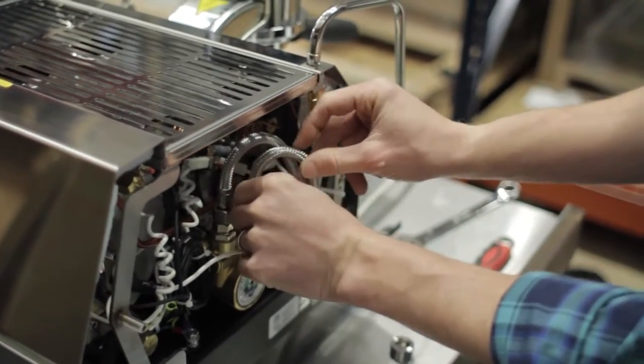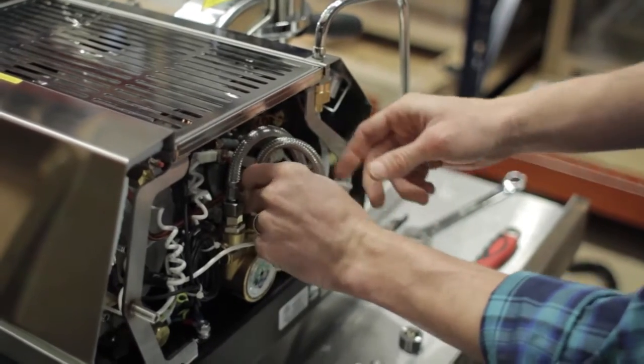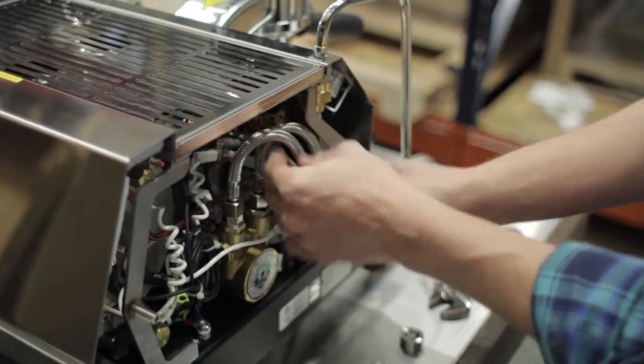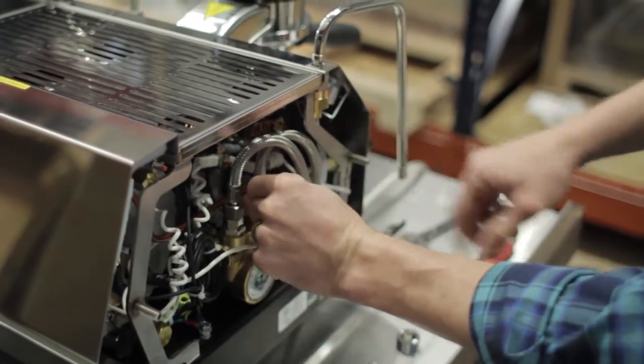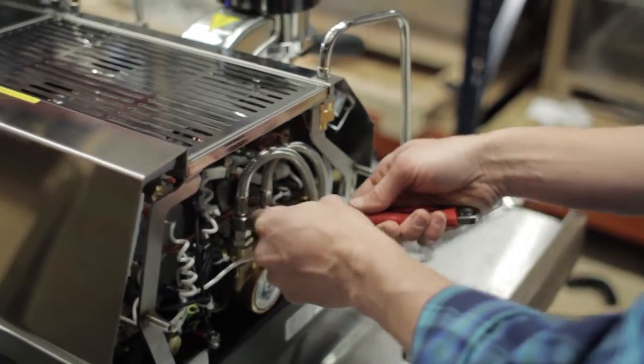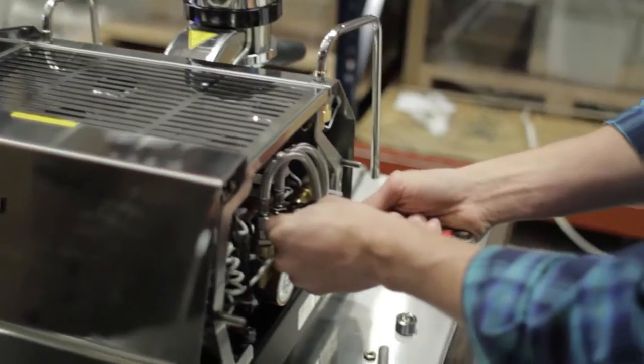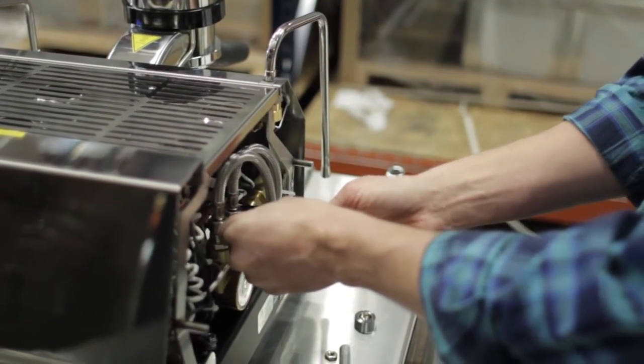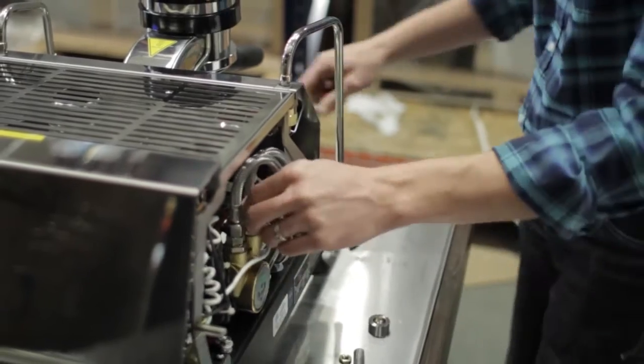Make sure you don't get any kinks. In this line you want this to be tucked like that so you get a nice easy curve and we don't restrict our water flow. Snug that up again. Not too much. Just a little past snug like that.